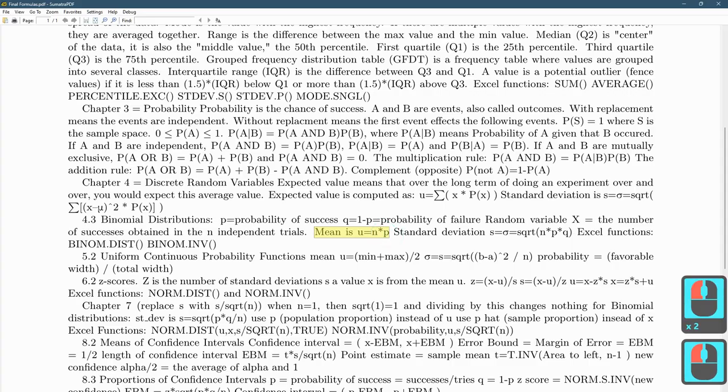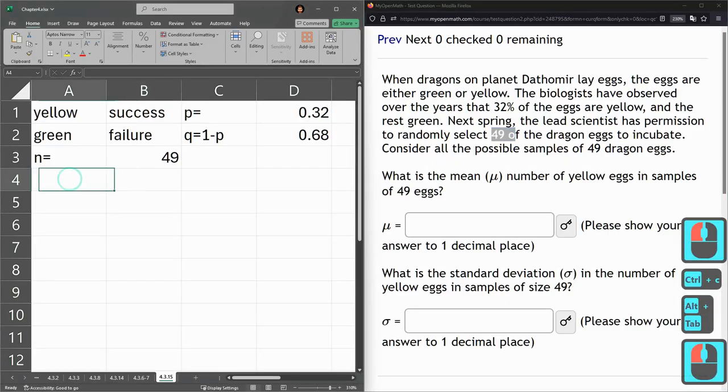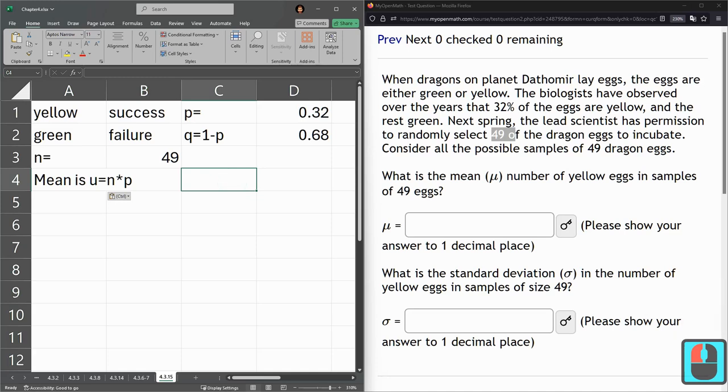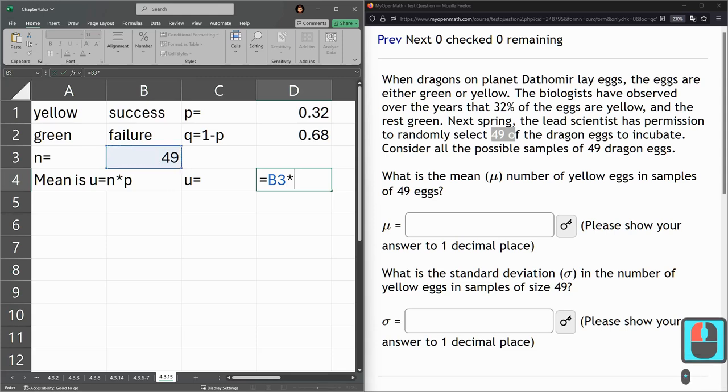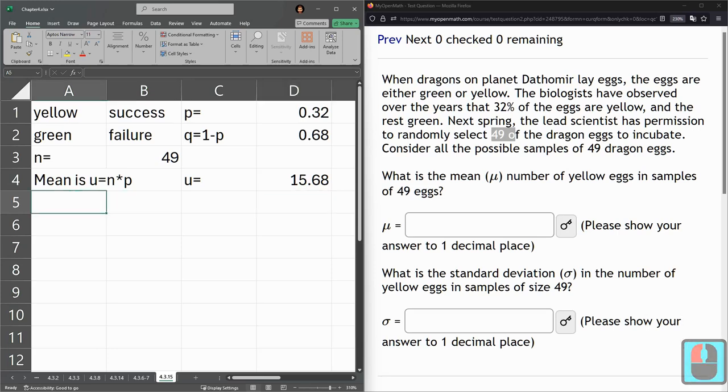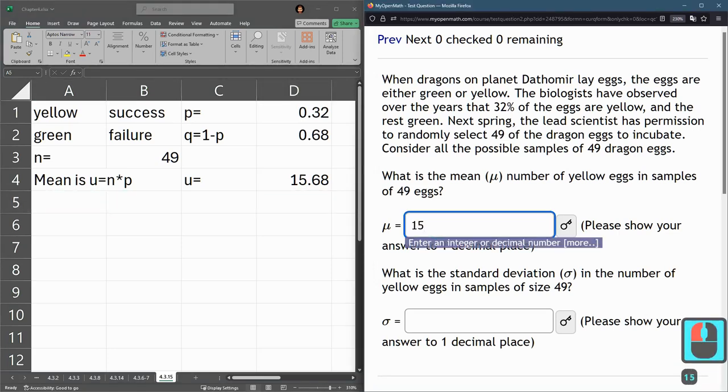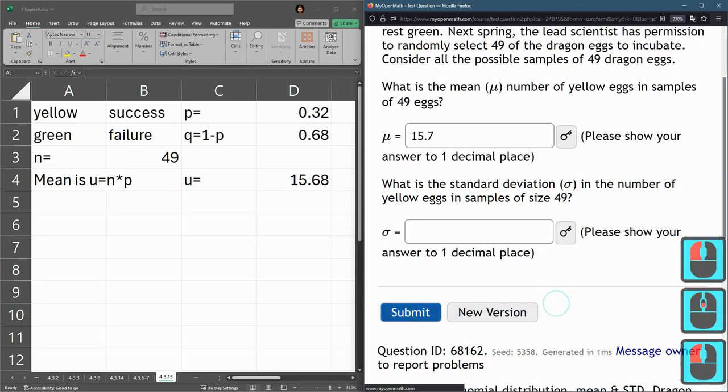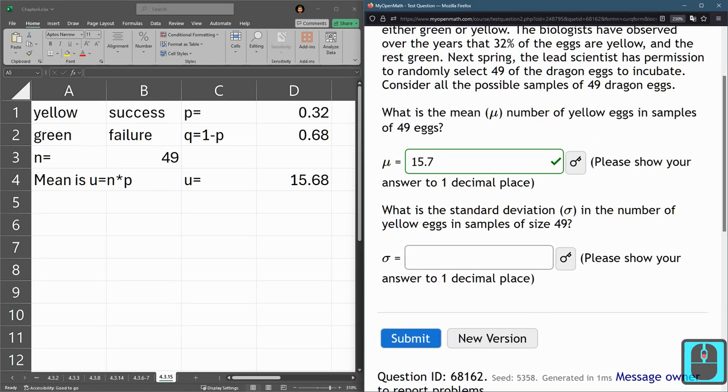You can even just copy and paste this right over. So we've got μ equals, here is our n times p, right there. That's our mean. And we'll type that here. They may want us to round one decimal, so we'll go up to 15.7.